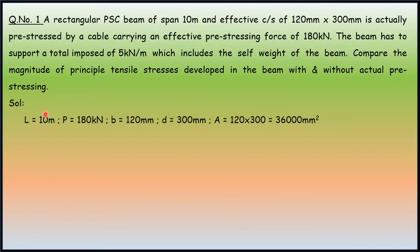Solution. Length L is 10 meter. Pre-stressing P is 180 kN. b is 120mm, d is 300mm. A equals 120 by 300 equals 36,000 mm square. Total load W equals Wd plus Wl, that is live load, which equals 5 kN per meter.